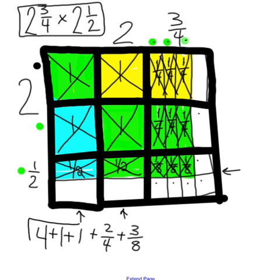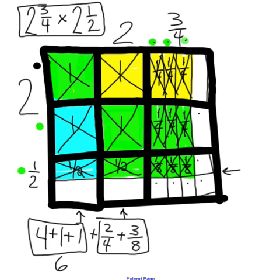Separating the wholes: four plus one plus one equals six. Now only the fractions remain to be added: two-fourths and three-eighths. In an addition problem, a common denominator is needed. Counting up by fours and by eights, the smallest common denominator of four and eight is eight.